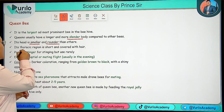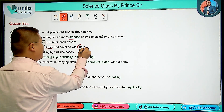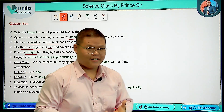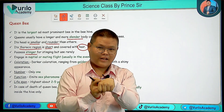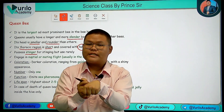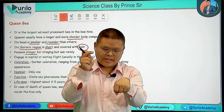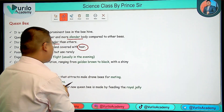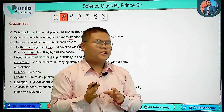The head has a round shape. The thoracic region is also noted. A stinger is present in the Queen Bee — this is an important feature.